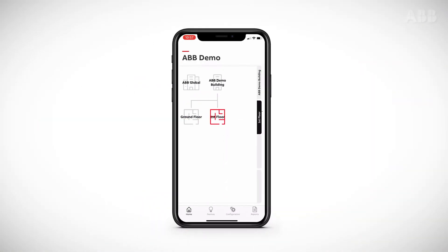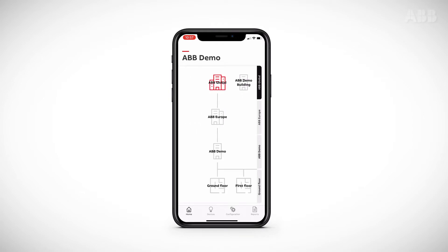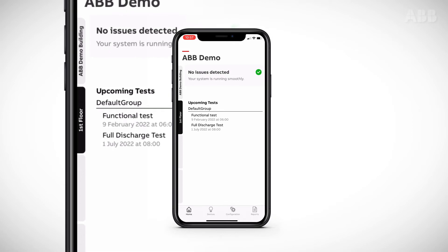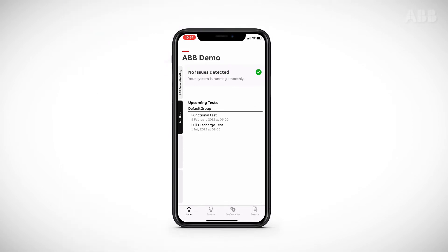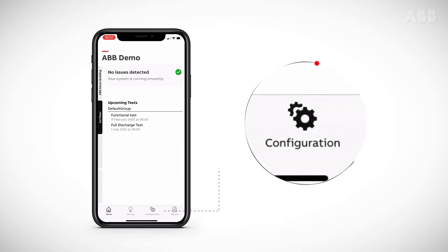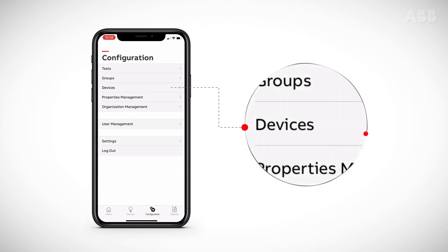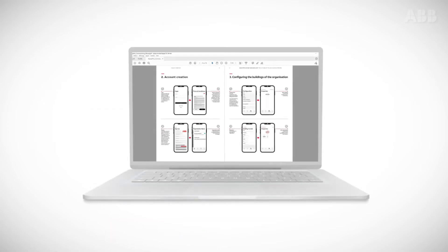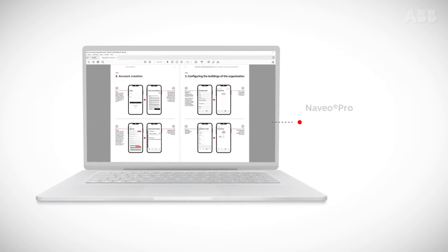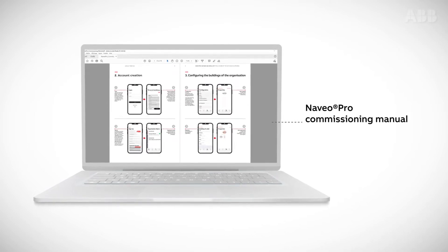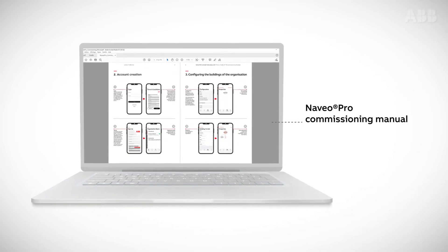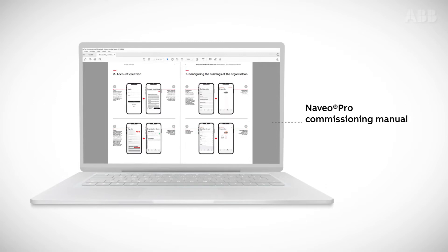If the building configuration has already been created, select the location of the gateway to be added using the tabs on the left. Select a building or a level, then click on the Configuration tab and then on Devices. If the configuration has no buildings, please create one. To create an organization with different buildings and levels, please refer to the commissioning manual available below in the description of this video.